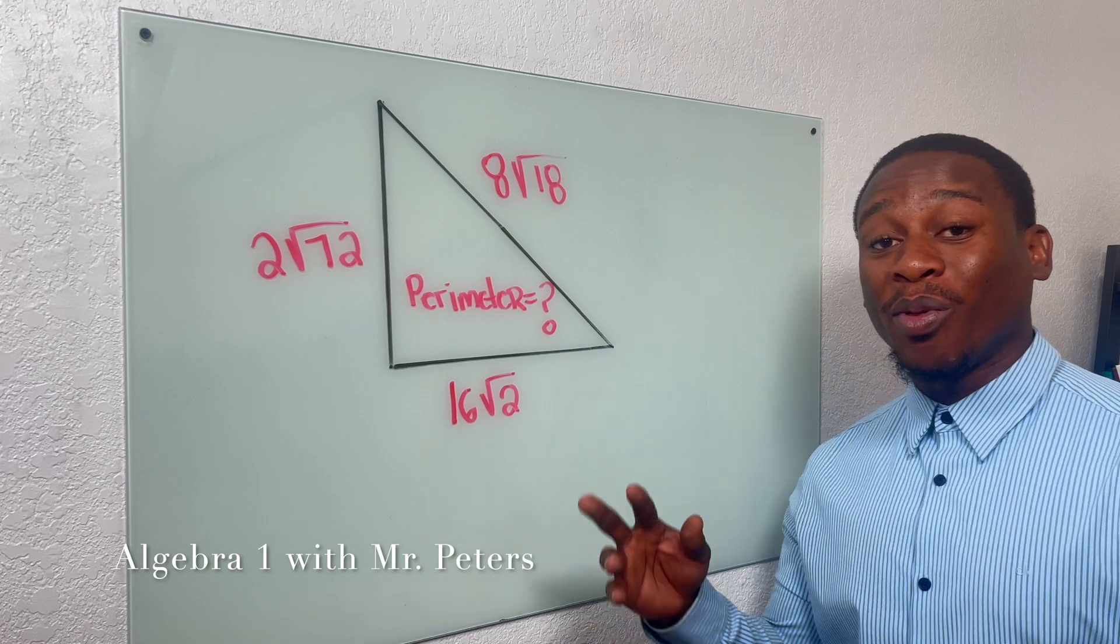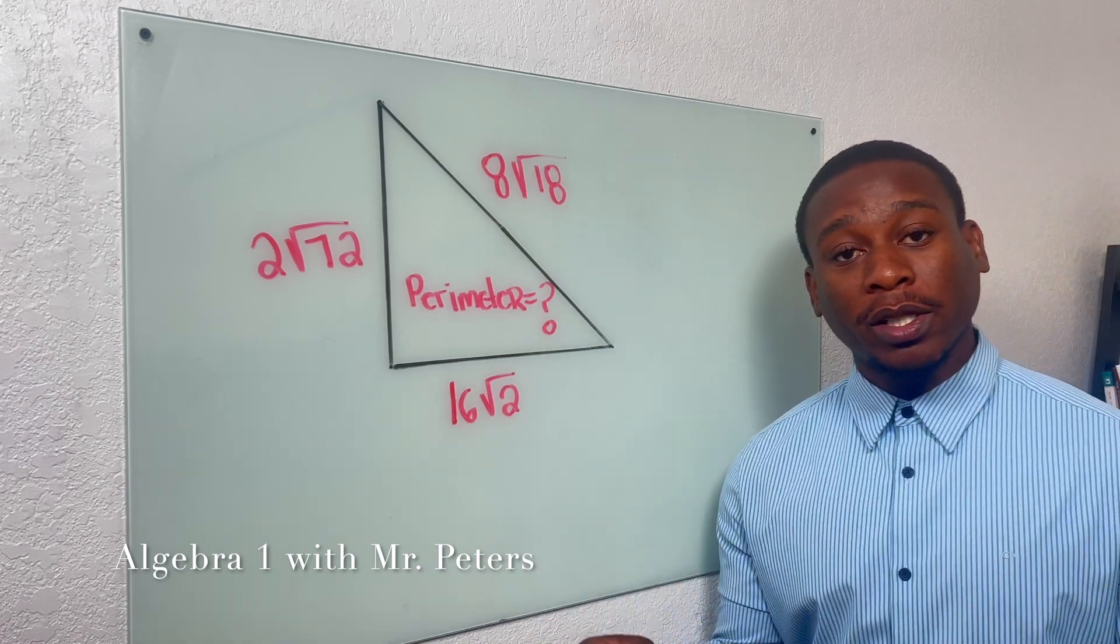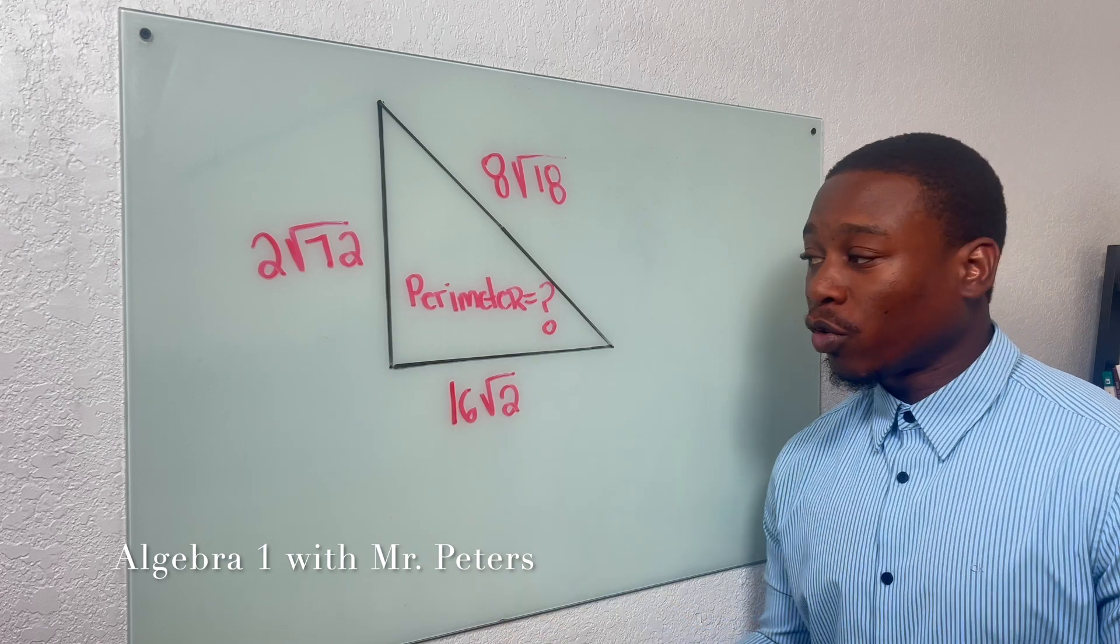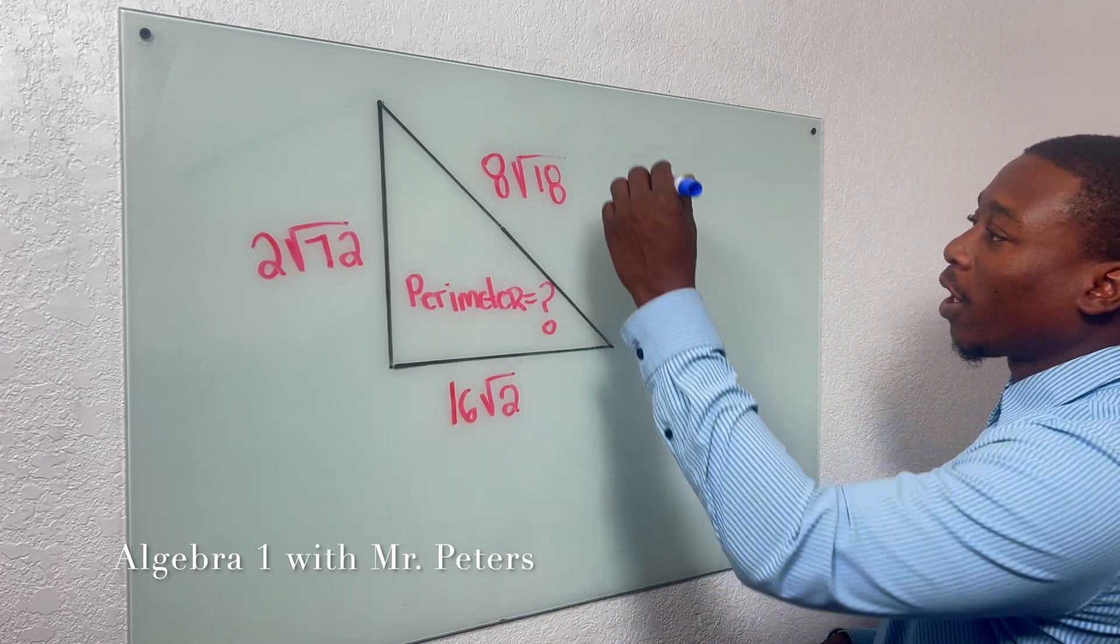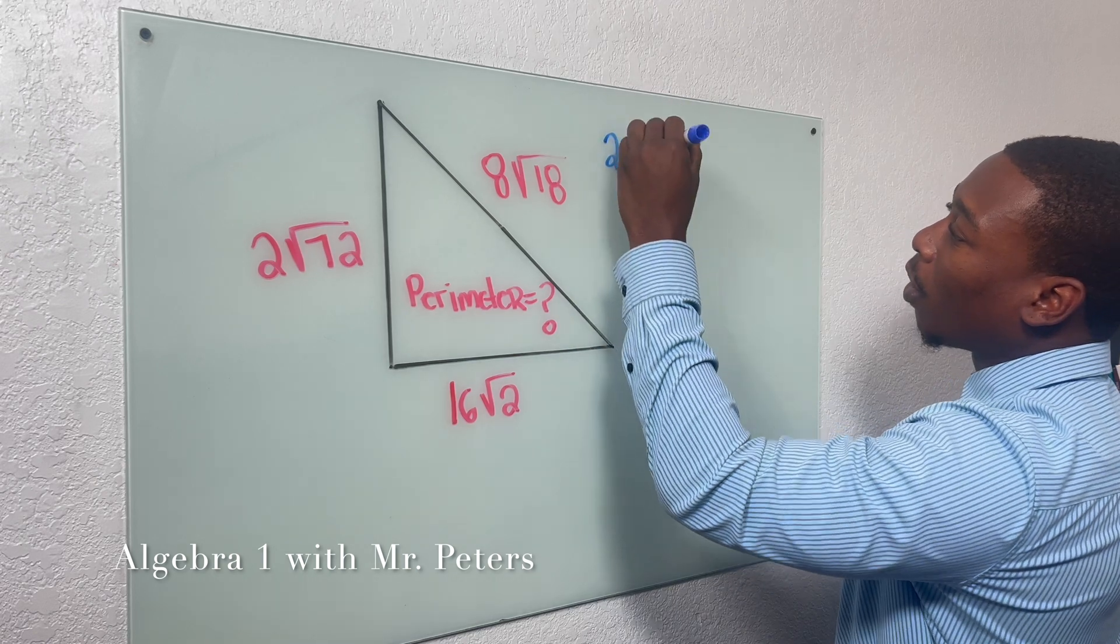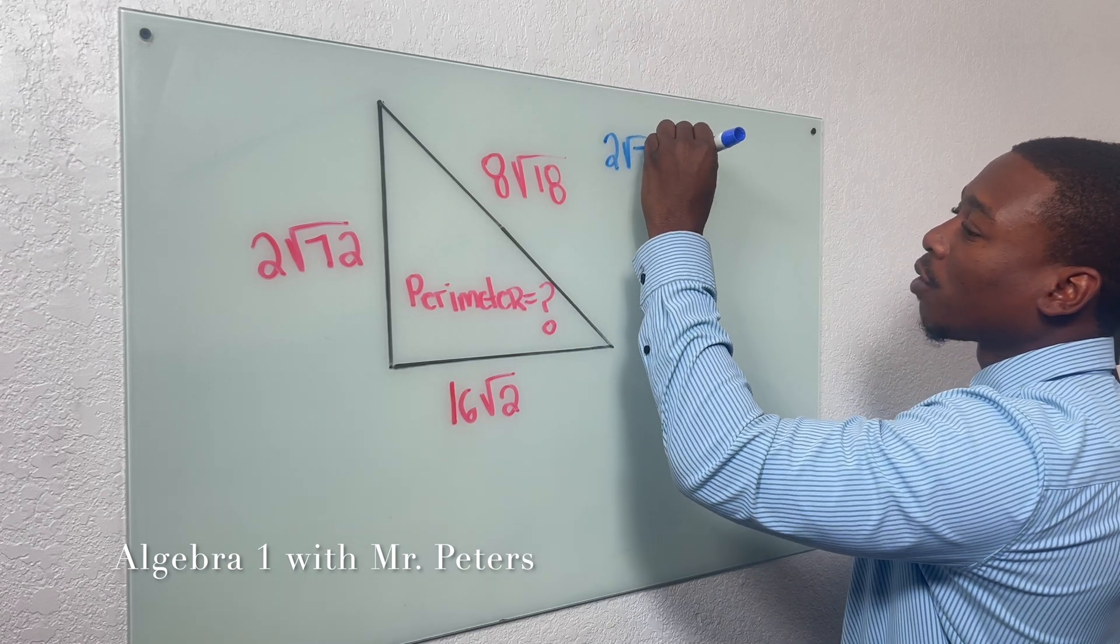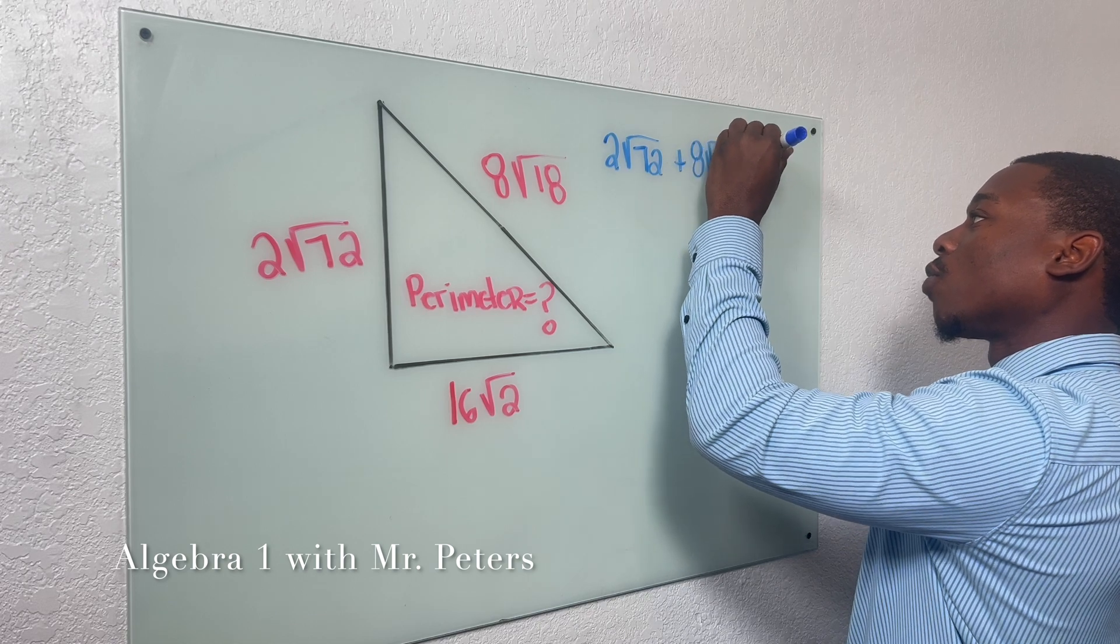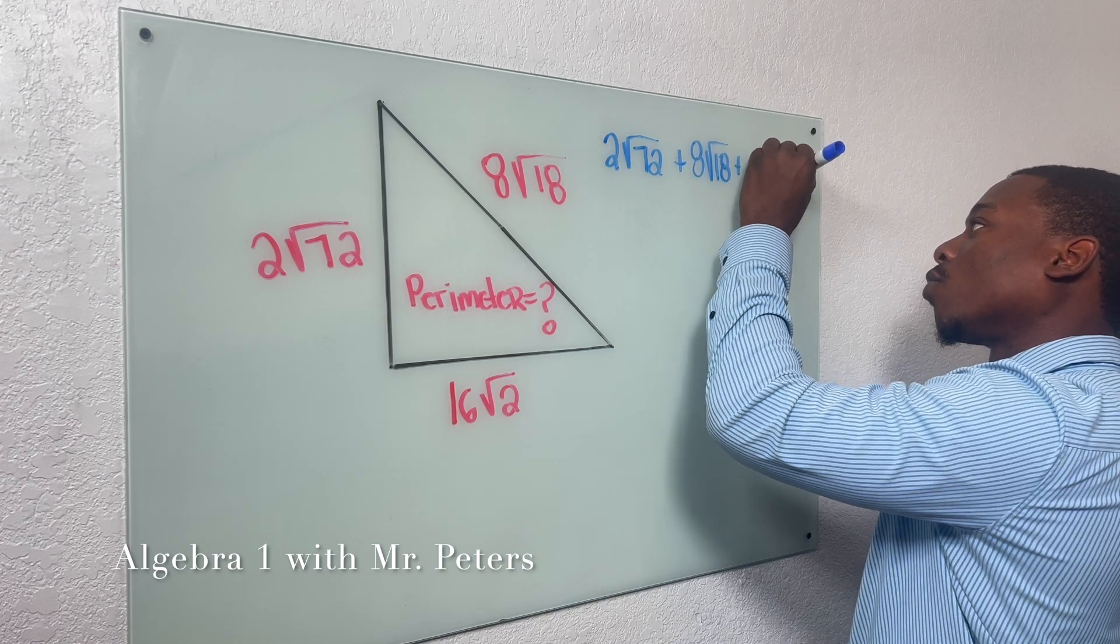We're moving on to problem number 2 now, guys. And in our second example, they're asking us for the perimeter of a triangle. Just remember that perimeter means we add all the sides together. So the first thing we want to do is just set up our problem, right?